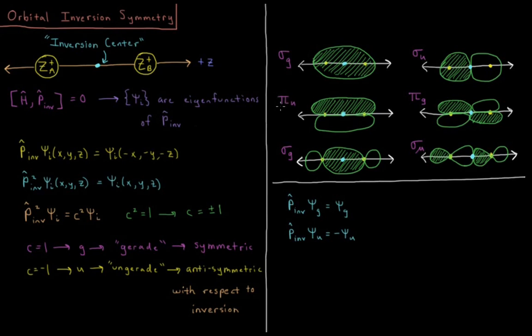Similarly for pi states, if I invert here, I go from positive to negative, negative to positive, everywhere I go. So this is, in fact, an ungerata orbital.